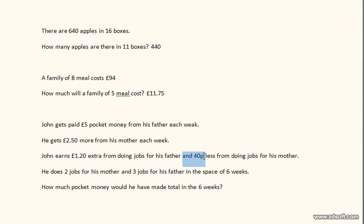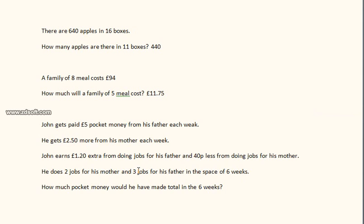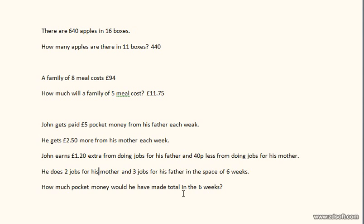For his mother it's 80p for 2 jobs, that's £1.60. Now £3.60 add £1.60 is £5.20. So we add £5.20 onto £75, which gives us £80.20 altogether. Yeah, that's the answer — £80.20.